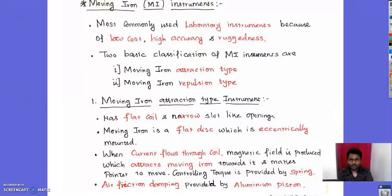Coming back to the topic, in the last lecture we covered the permanent magnet moving coil (PMMC) instrument and saw that its disadvantage is high cost compared to the moving iron (MI) instrument. Now we are going to look at moving iron instruments, also called MI instruments.